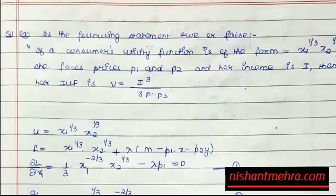This question was asked in the Indian Economic Services exam in 2014. It says: tell me whether the following statement is true or false. If the consumer's utility function is u = x1^(1/3) * x2^(1/3), she faces prices p1 and p2 and her income is i, then her indirect utility function is v = i³ / (3p1p2).